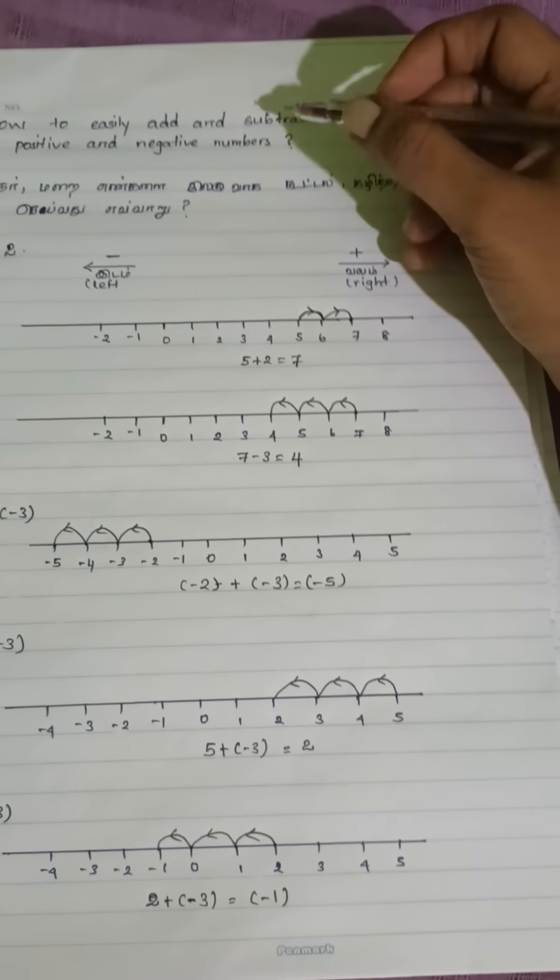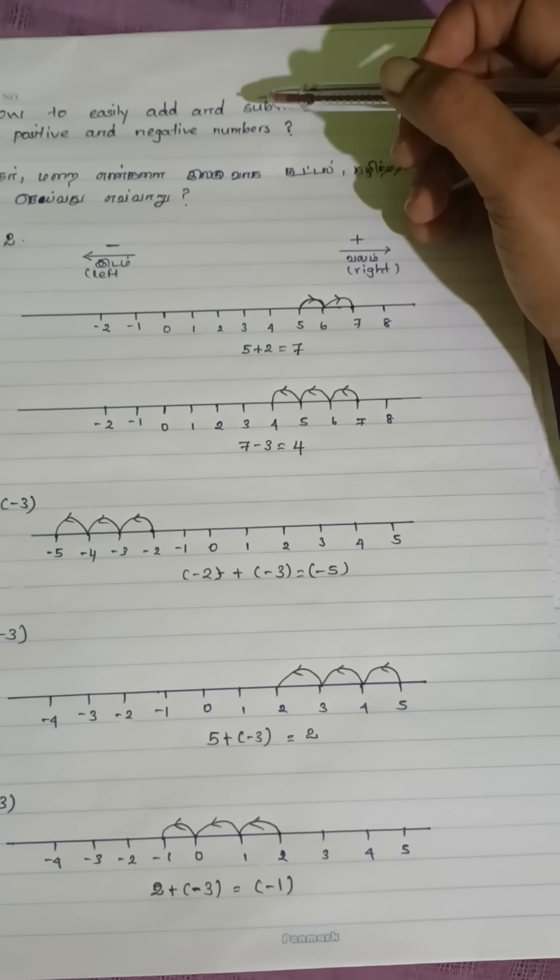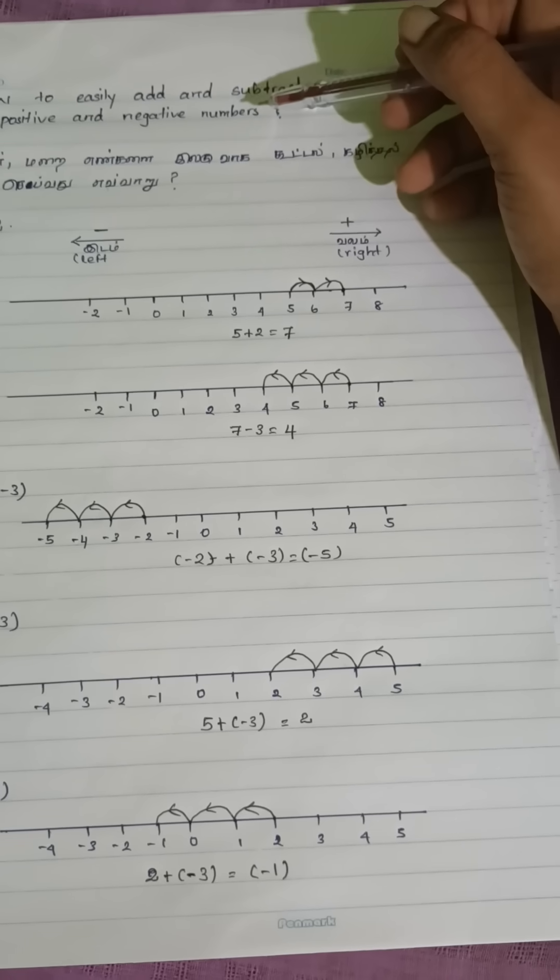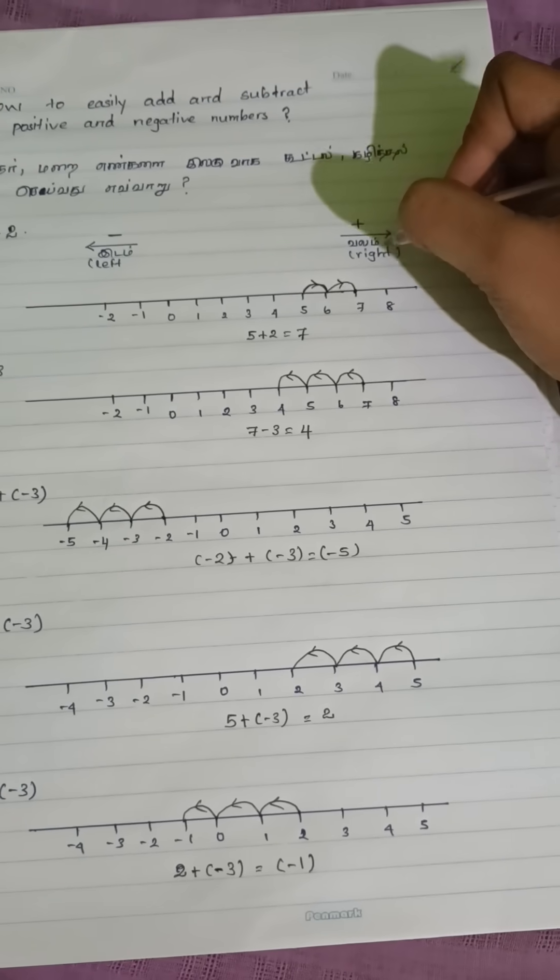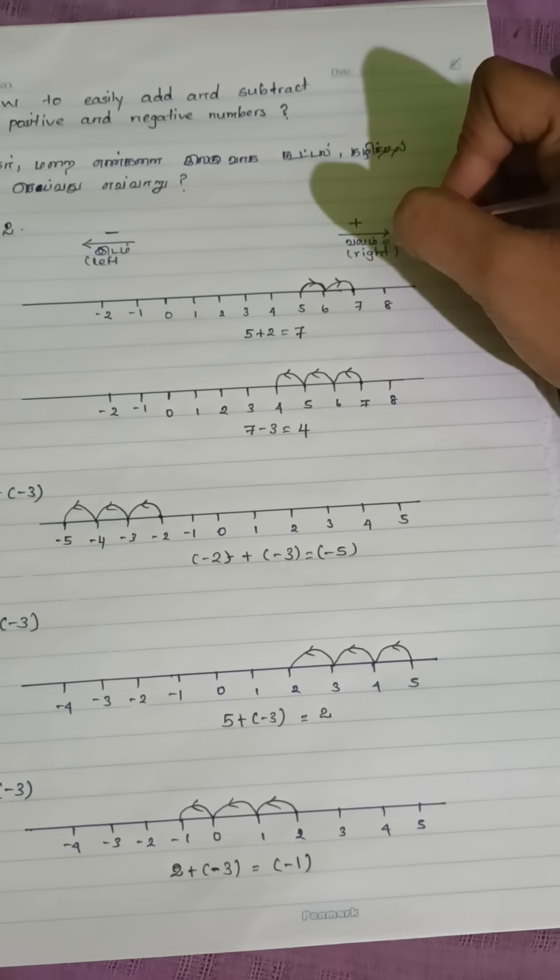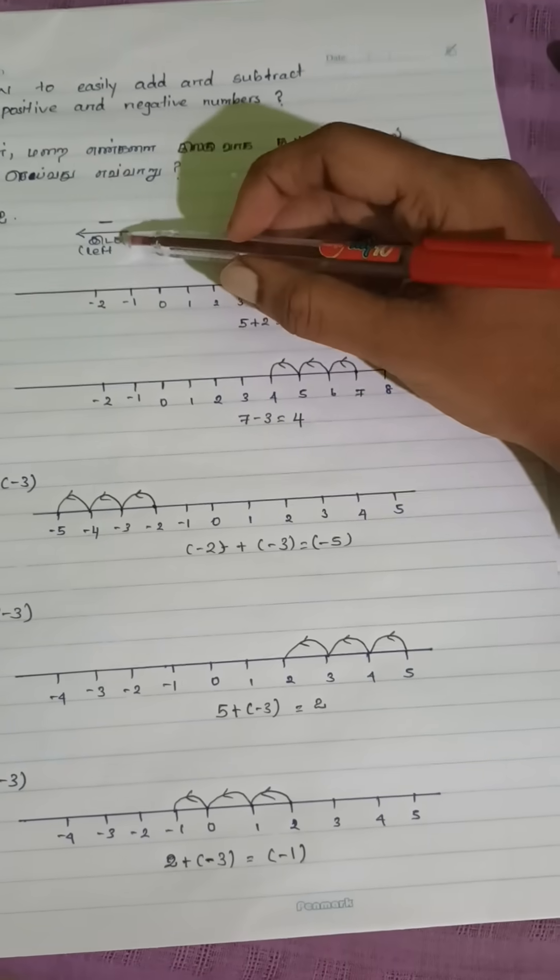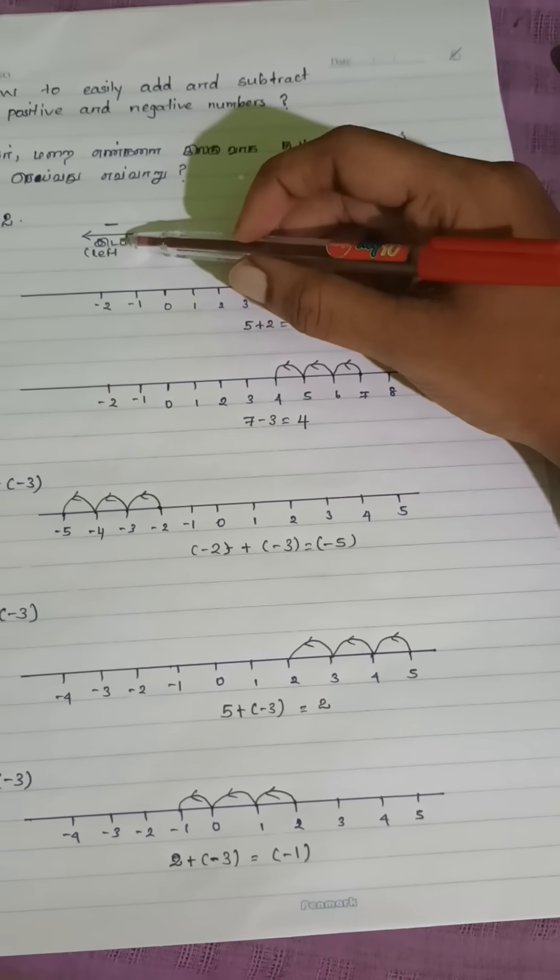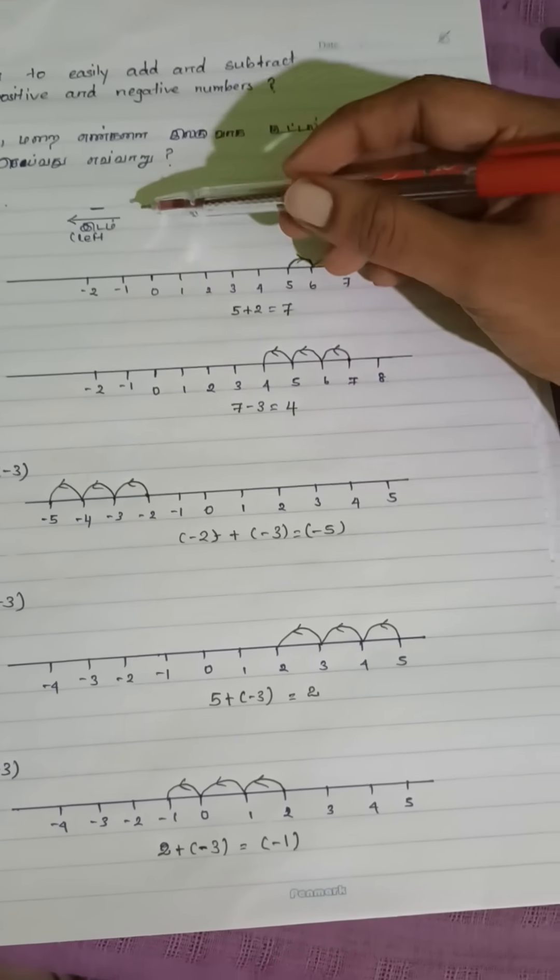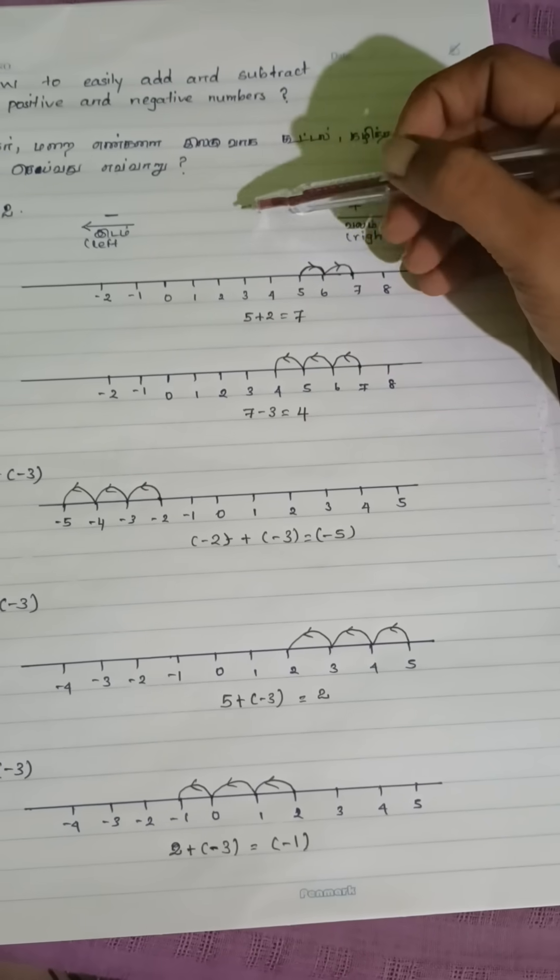This page explains how to easily add and subtract positive and negative numbers using a number line. Using a number line, right direction is positive numbers, I mean addition. Left side means negative numbers, I mean subtraction. Each problem is visualized using a number line to help understand the numbers.